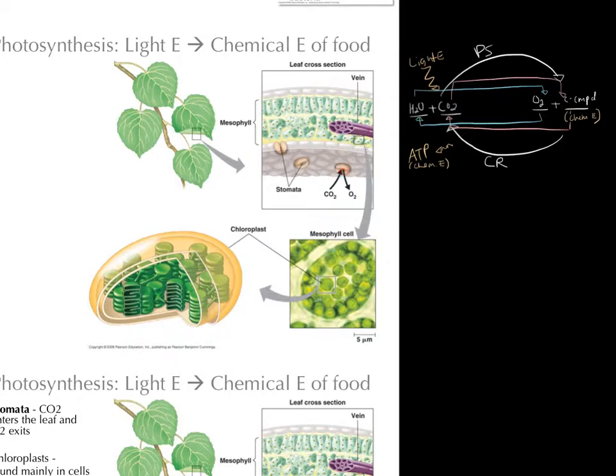A single pore is a stoma, stomata is plural. They have little cells that can open and close to regulate water, depending on conditions. Zooming in on a single mesophyll cell, all the round green parts are chloroplasts. Inside the chloroplasts, there are additional structures we're going to draw and label. That's the basic setup of photosynthesis.